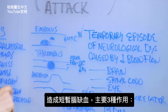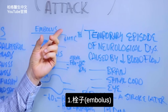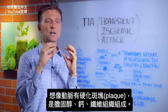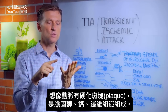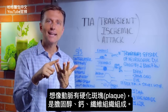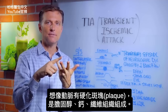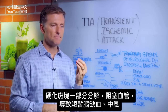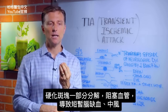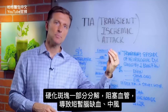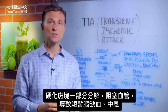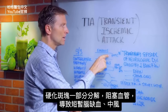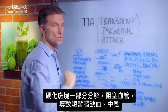There are three main mechanisms. The first one is an embolus. Envision plaquing in the artery composed of cholesterol, calcium, and fibrous tissue. Part of that plaque broke off and plugged up a vessel somewhere else in your body — that would cause a TIA or a stroke.